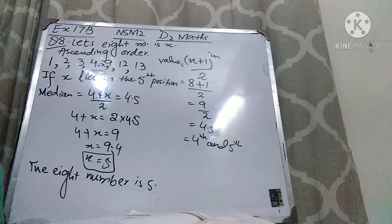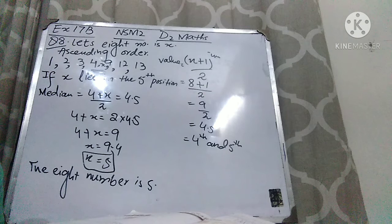I hope this question is clear to you. To revise: we had to find the 8th number and assumed it was x. We tested x at the start — it failed; x at the end — it failed; x in the middle at the 4th position — it failed because we got a value greater than 4 before 4. Finally, x at the 5th position gave x = 5, which is valid since 5 lies after 4. The 8th number is 5. Do practice this sum so the concept becomes more clear. Take care of yourself. Thank you very much.